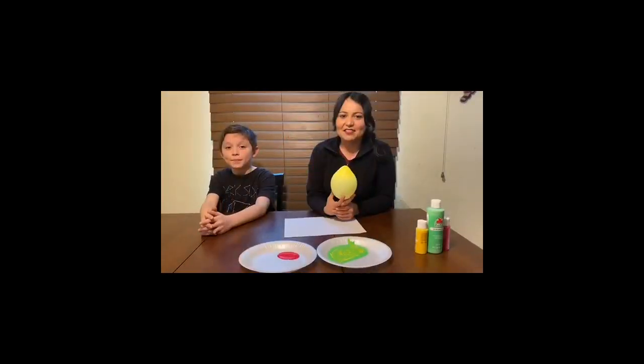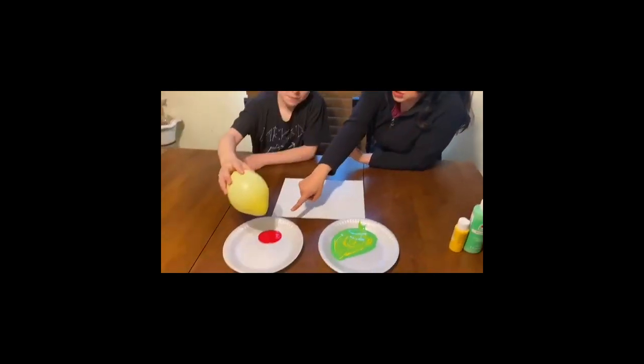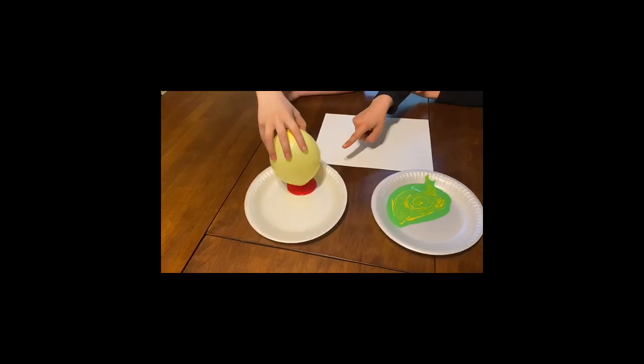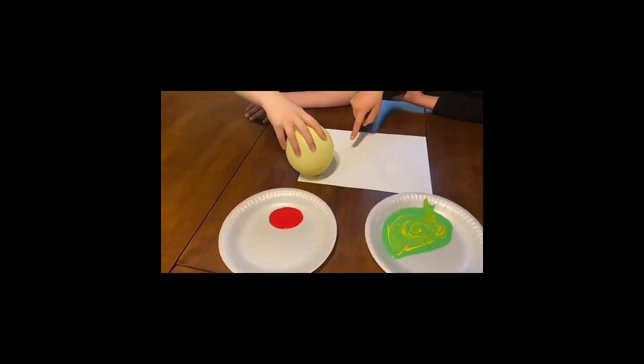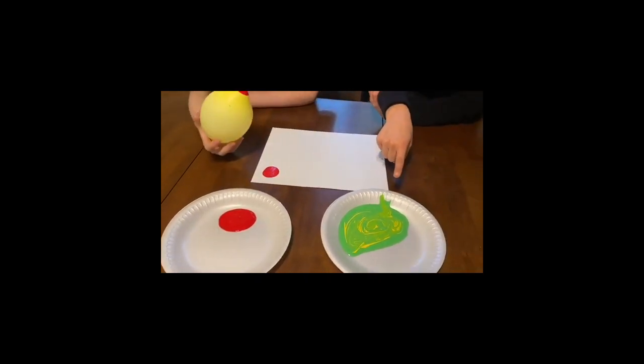We're gonna begin by giving the balloon to our child. We're gonna use the color red. We're gonna gently dip it on the paint. Then we're gonna stamp it on the paper. Then we're gonna continue with the body. Dip it on the paint.